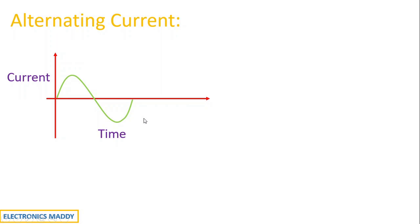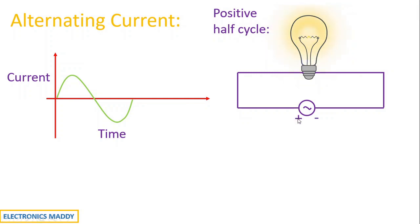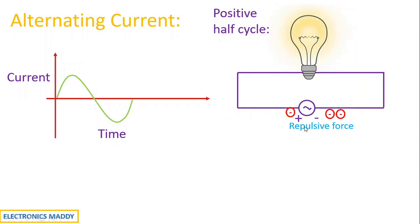How is it actually working with respect to the lighting load? During the positive half cycle, the polarity of the supply is plus and minus. The repulsive force between the negative terminal and the electron in the conductor allows the electron to gain sufficient energy to hit the next electron, which in turn hits the next, and the final electron gets attracted to the positive terminal. So the flow of electrons in this case moves through the circuit in one direction.